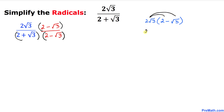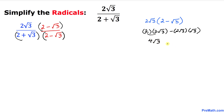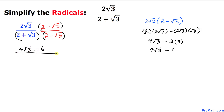This can be written as 2 times 2 times square root of 3, minus 2 times square root of 3 times square root of 3. This gives us 4 times square root of 3, minus 2 times 3, which equals 4 times square root of 3 minus 6. So our numerator simplifies to 4 square root of 3 minus 6.